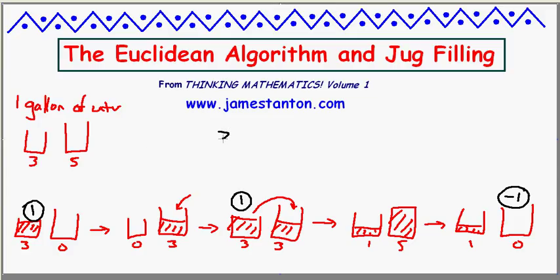So really, this jug filling problem is an arithmetic problem in disguise. What we're looking for is some combination of threes and fives that gives the answer one. And we used this combination: 2×3 + (-1)×5 = 1. But there are other answers as well.